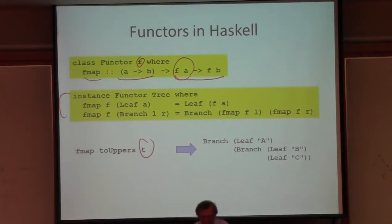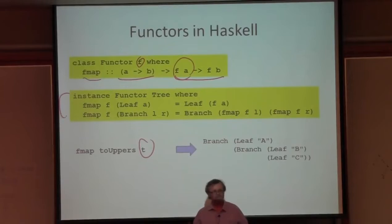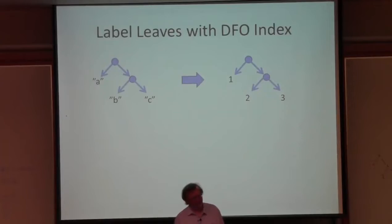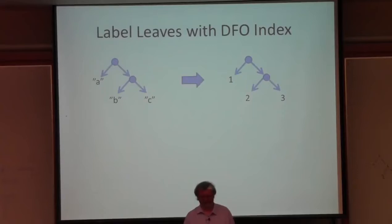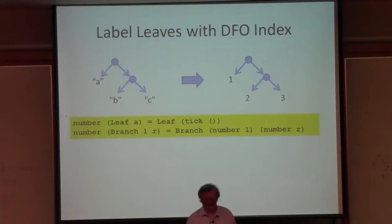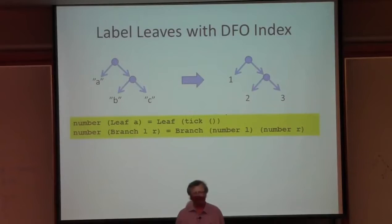I hope that all went well. If there's anything unclear, now is a good time to ask a question. Let me go on and write a few more functions - I'll just play with trees a little bit. One of the things I might want to do is to label the leaves with their index in depth-first order. I want to construct a tree with the same structure but where the leaves have been replaced by those indices. I'll call the function 'number'. To number a leaf, all I need to do is construct a leaf and increment a counter to get the next index. To number a branch, I recursively number the left and right subtrees and combine them with a branch constructor.